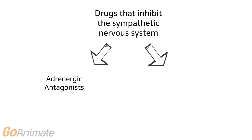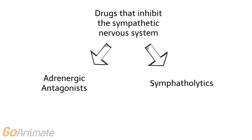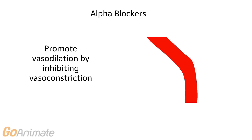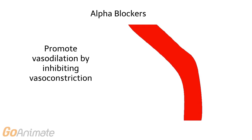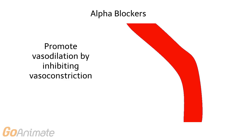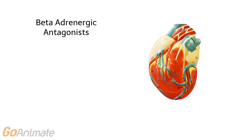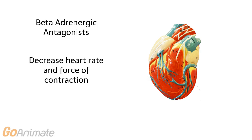Drugs that inhibit the sympathetic nervous system are called adrenergic antagonists or sympatholytics. Adrenergic antagonists block adrenergic receptors. Alpha-adrenergic antagonists, or alpha-blockers, promote vasodilation by inhibiting vasoconstriction and also promote pupil constriction. Beta-adrenergic antagonists, or beta-blockers, can affect the beta-1, beta-2, or both types of receptors.